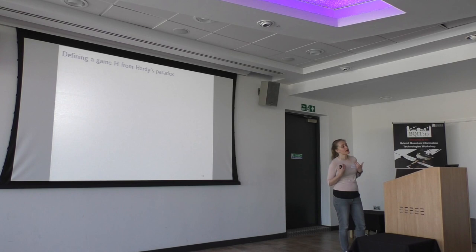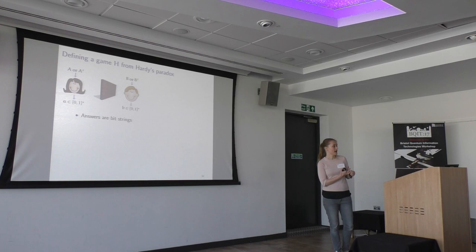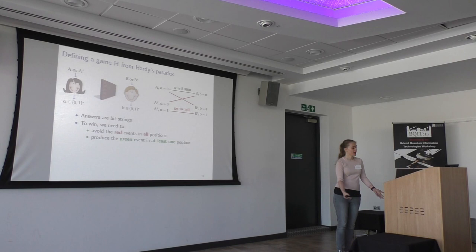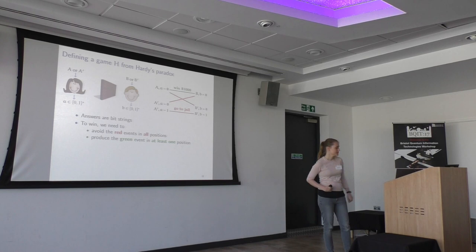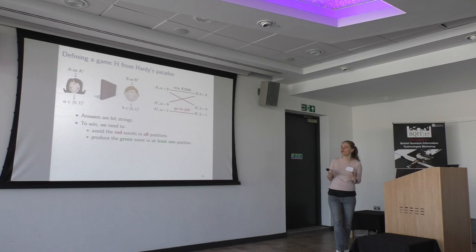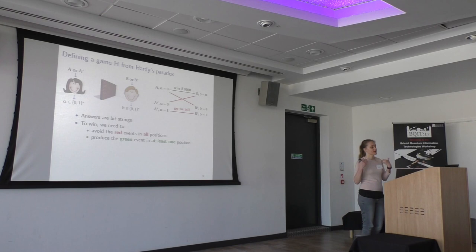What I'm going to do now is define a more complicated scenario which is going to allow us to test for arbitrarily high dimensions. Again, we have Alice and Bob. The questions are the same — A and A prime for Alice, B and B prime for Bob. But now, instead of answering with bits, they will be allowed to answer with bit strings of any finite length. The rules of our new challenge are the following: we take Alice's and Bob's answer bit strings and compare them bit by bit. In order to win, they need to satisfy two conditions — they want to avoid the red events in all positions of their bit strings, and they want to produce the green event in at least one of the positions.